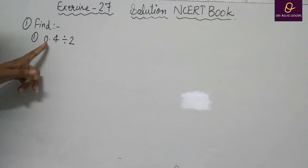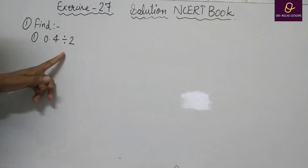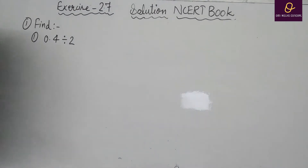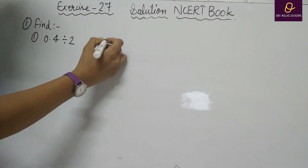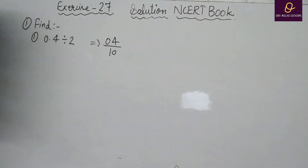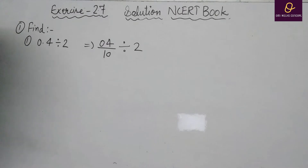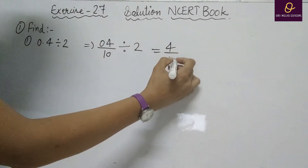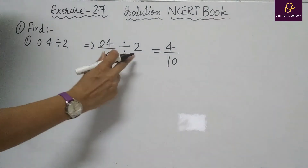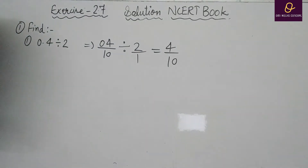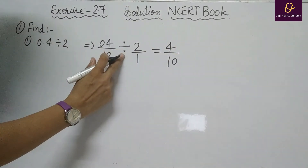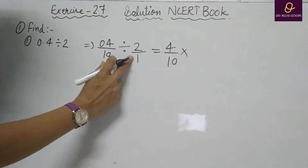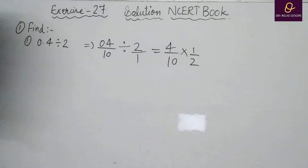The first question is: find 0.4 divided by 2. When you divide this, first we will remove the decimal. So 0.4 becomes 4 divided by 10, then divided by 2. That will be equal to 4 by 10, and divide will change into multiply. There is no number in the denominator so we write 1, giving us 4 by 10 multiplied by 1 by 2.